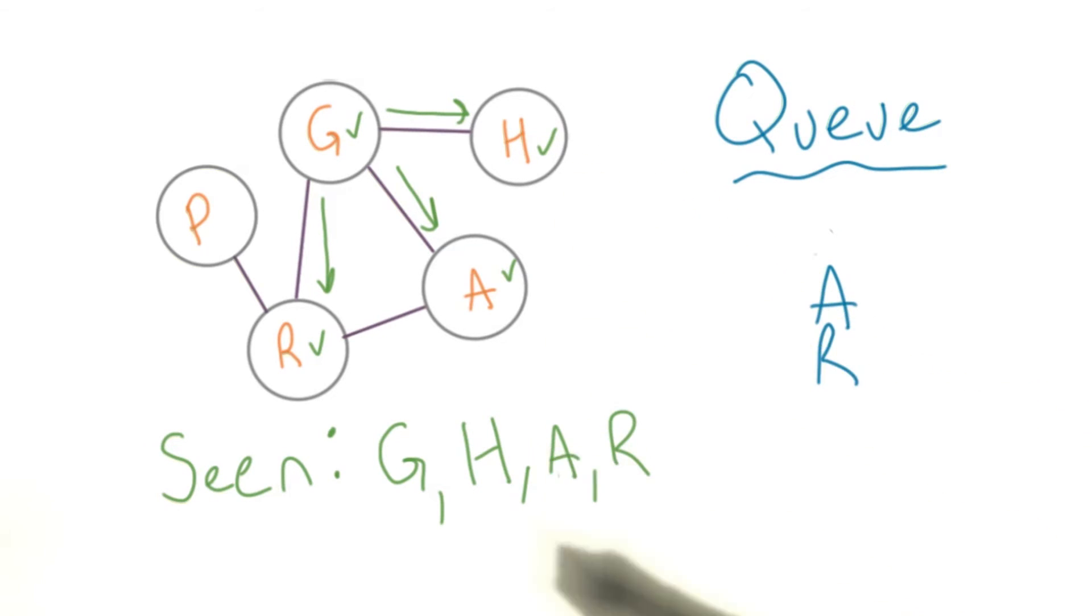We look at every node adjacent to that one, adding each one to the queue until we've exhausted our options.